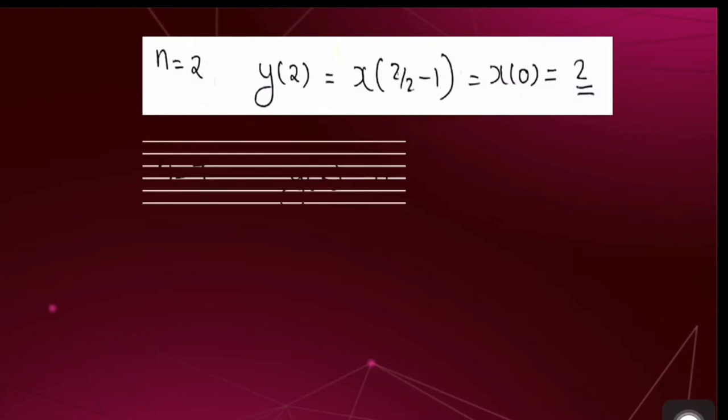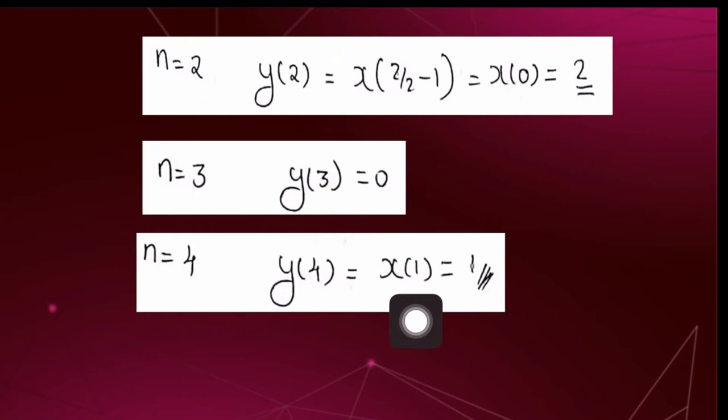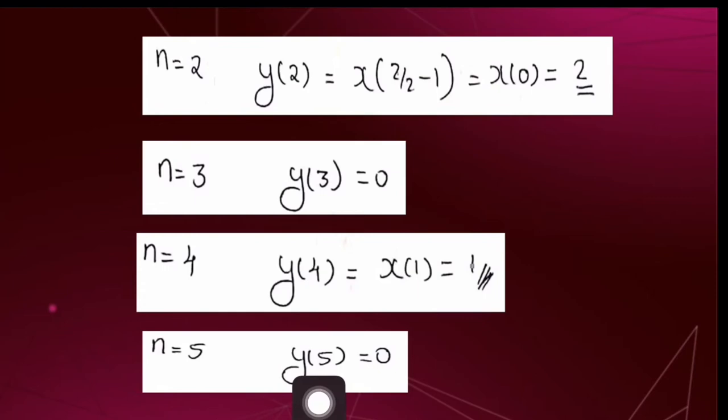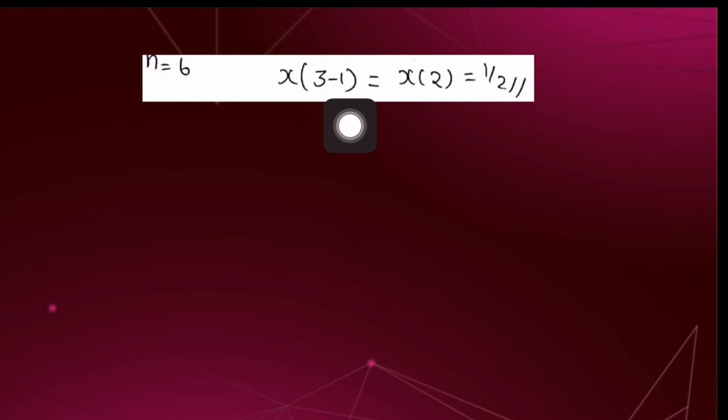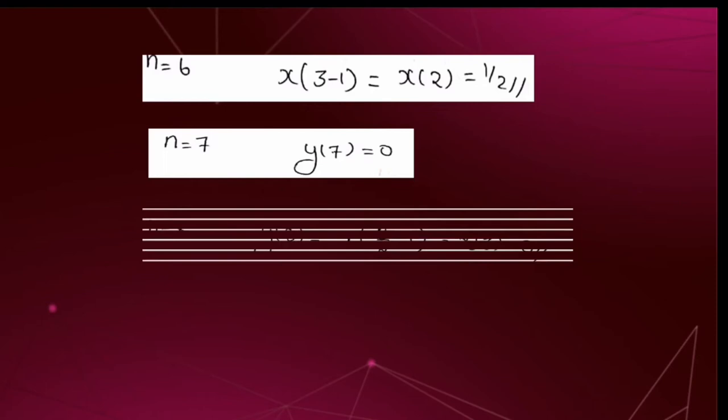y[3] can be directly equated to 0 since it is an odd number. At n = 4, we get y[4] = x[4/2 − 1] = x[1] = 1. We can directly equate y[5] to 0. At n = 6, we get y[6] = x[6/2 − 1] = x[2] = 1/2. At n = 7, y[7] = 0 since it is an odd number.